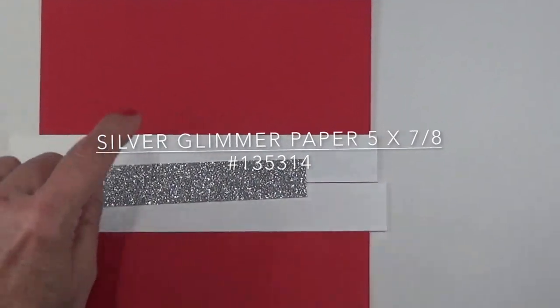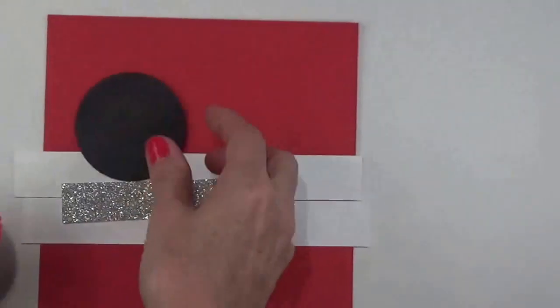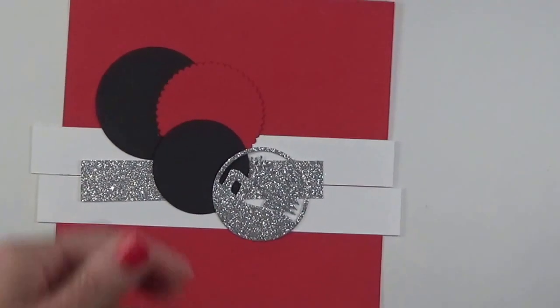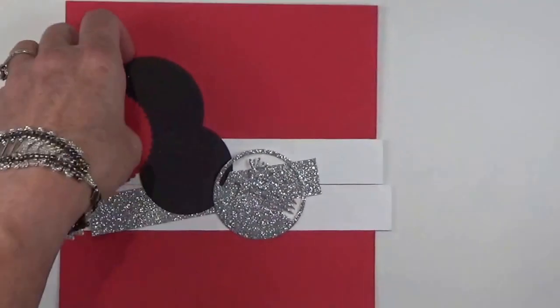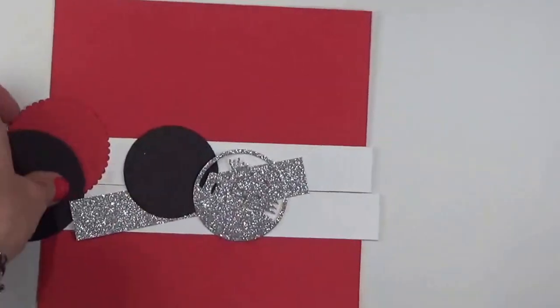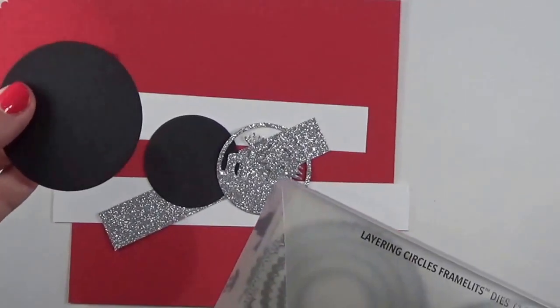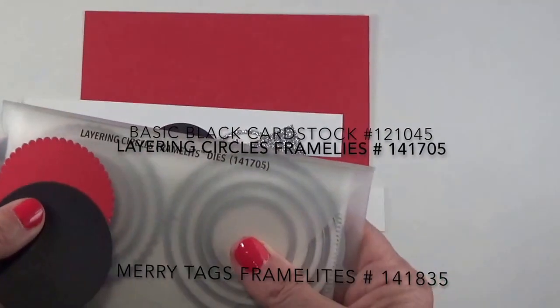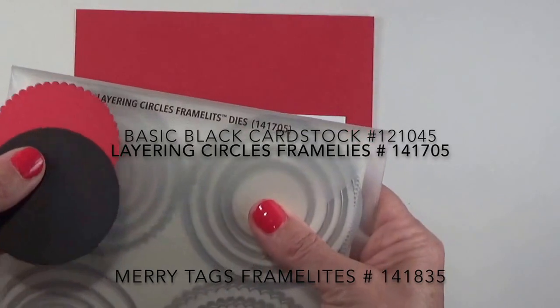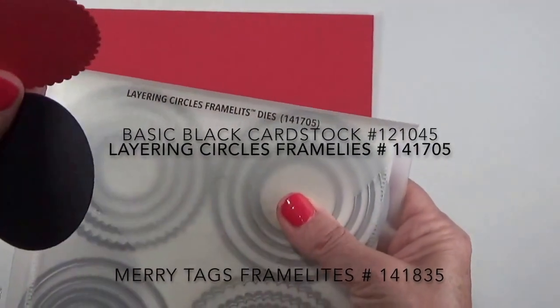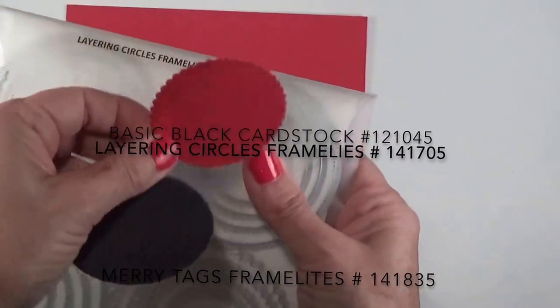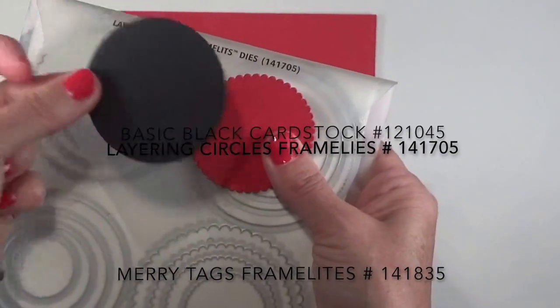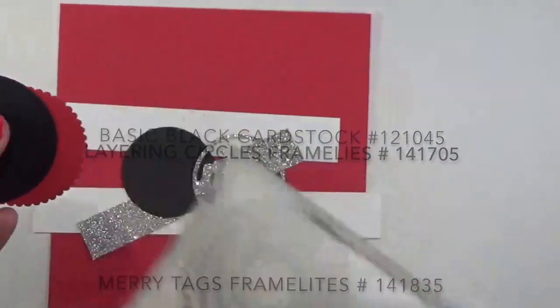Then I have a variety of circles here and a little ornament. What I use to cut these out is the scalloped real red cardstock and the basic black. I used our layering circles framelit dies to cut those out. The sizes that I used was for the scallop, it's the two and one eighth inch scalloped circle, and then for the plain circle it's the two and three eighths inch circle framelit.